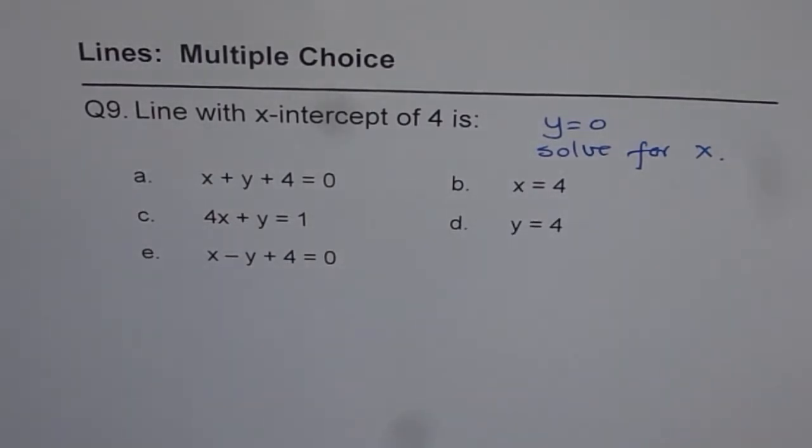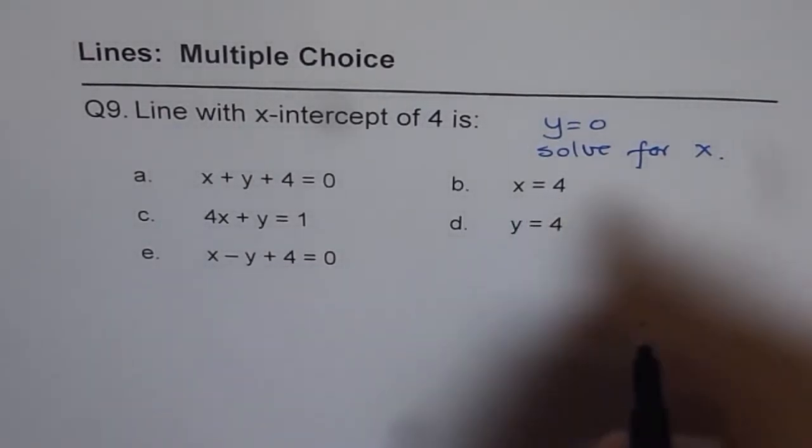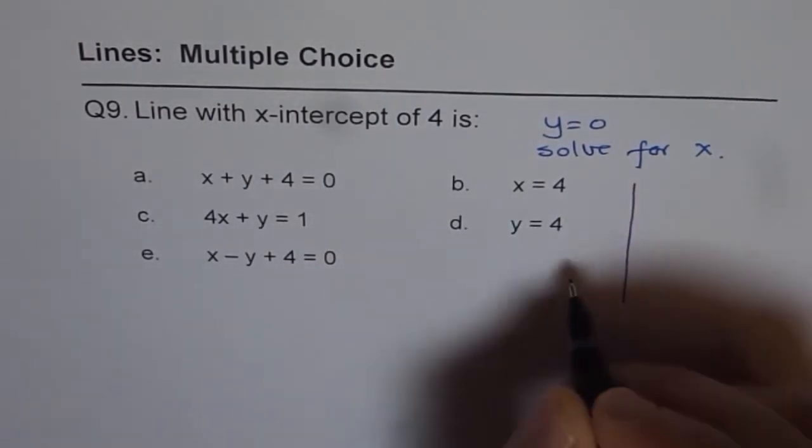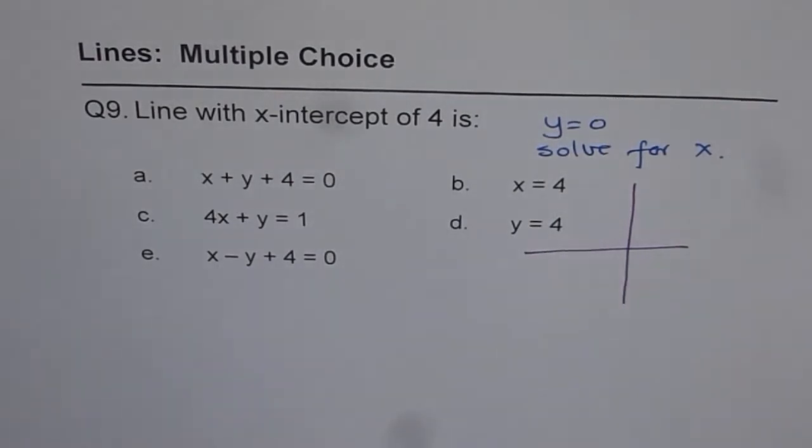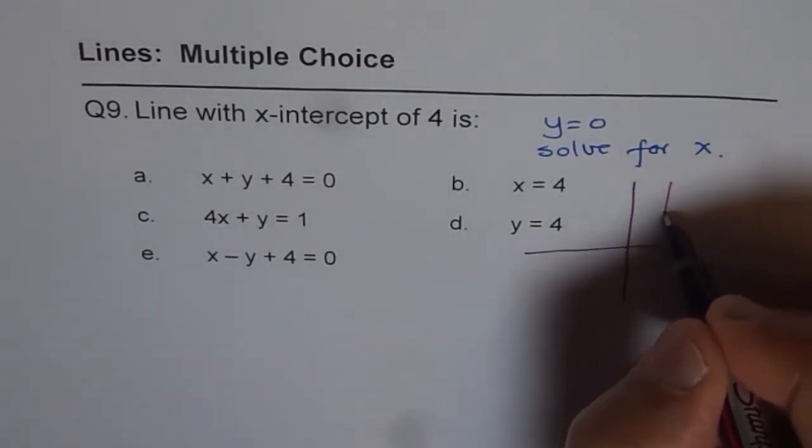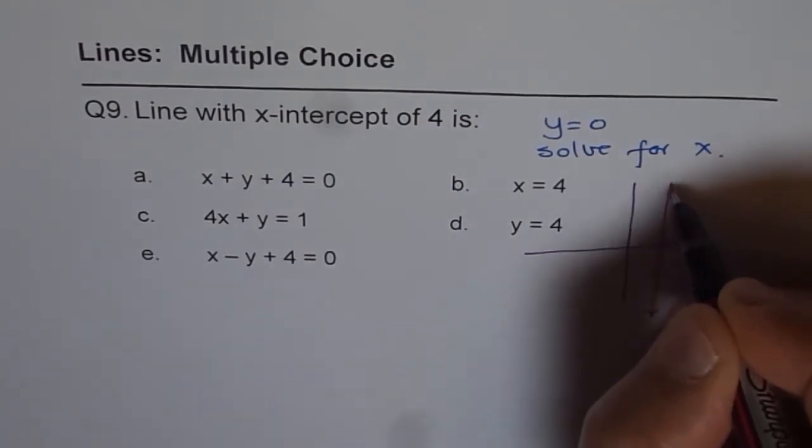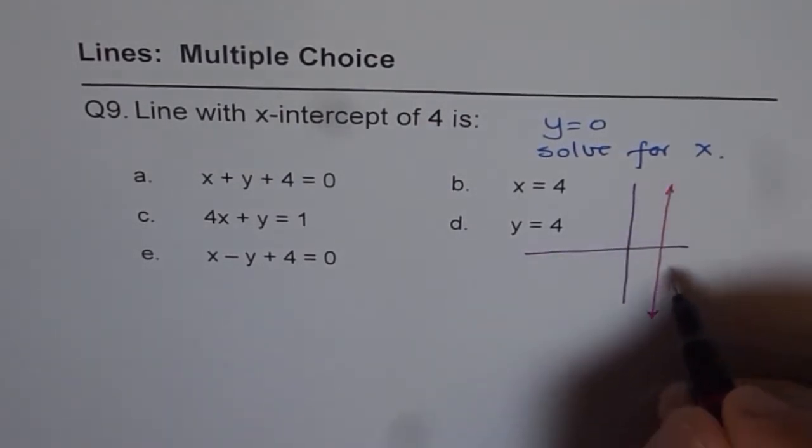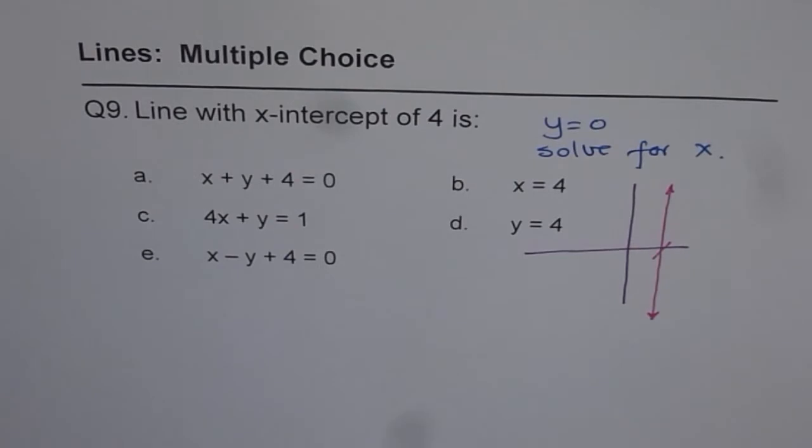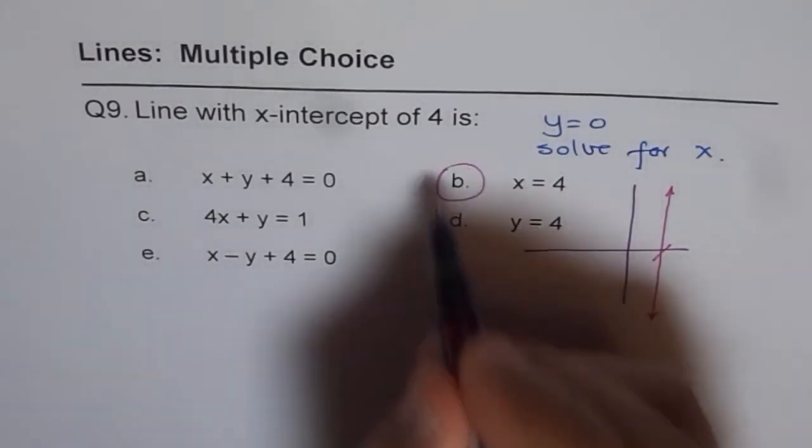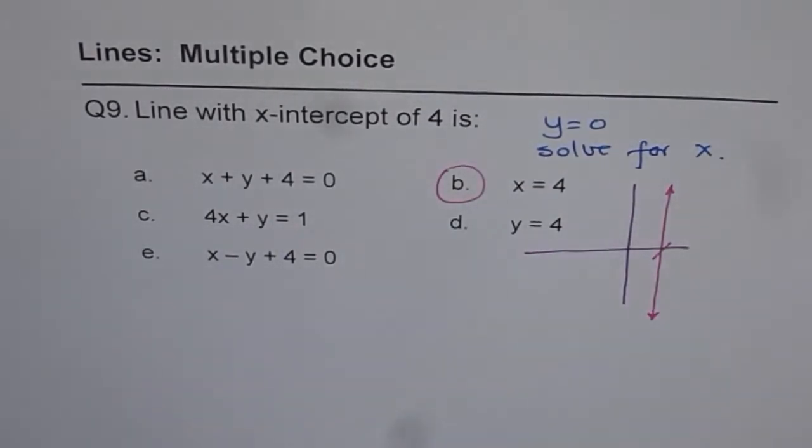We are left with these two equations. One of them is the right answer. Now, x equals to 4 really means what? x equals to 4 is a vertical line. The y values can be anything, but x value is always 4. That is indeed the right answer and that is also the x-intercept.